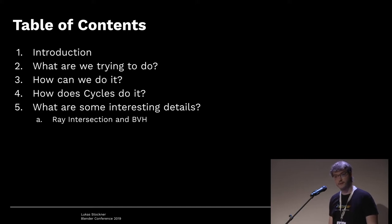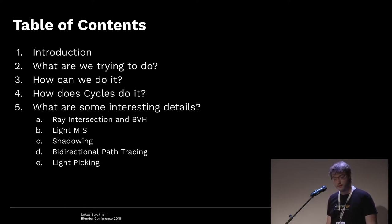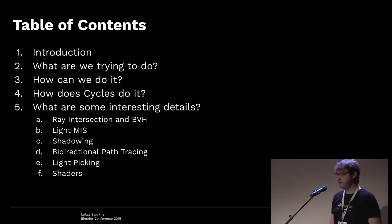Some selected interesting details which I often see coming up in discussions: first of all, how does ray intersection work, what is the BVH, what is multiple importance sampling and what does it have to do with lights, how does shadowing work, what is bidirectional path tracing and why does Cycles not do it.